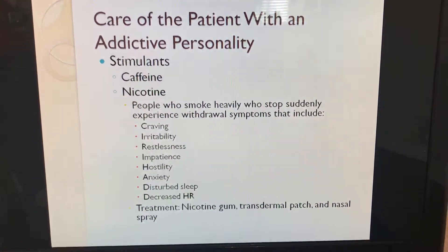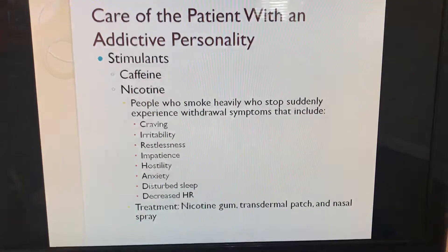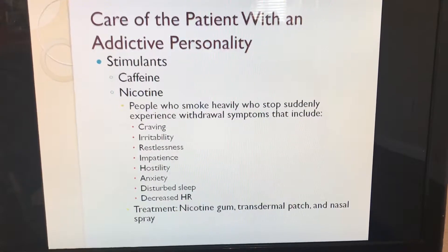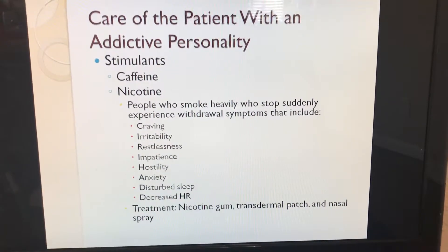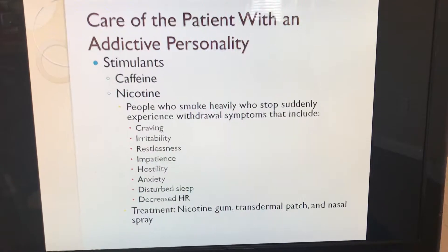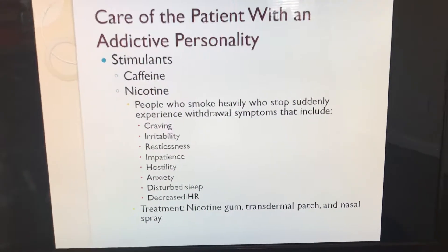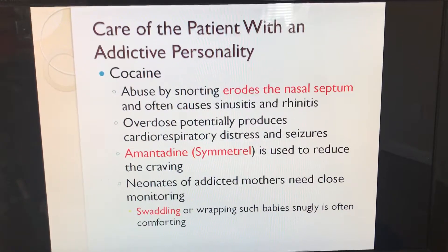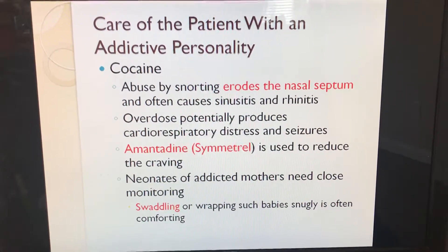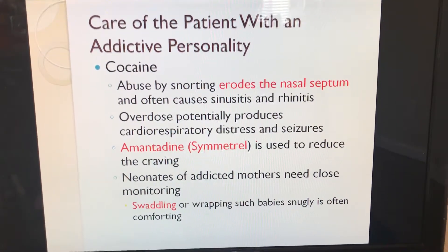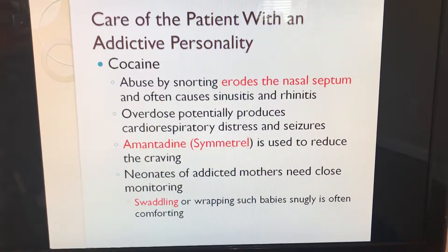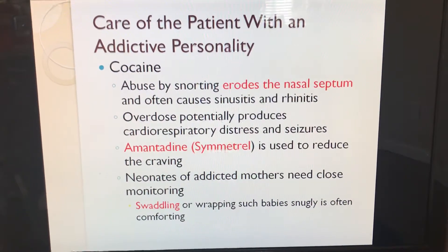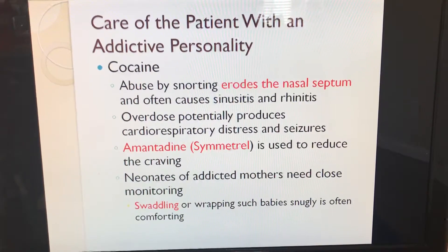Stimulants include caffeine and nicotine. People who smoke heavily and stop suddenly experience withdrawal symptoms including craving, irritability, breathlessness, impatience, hostility, anxiety, disturbed sleep, and disturbed heart rate. Treatment includes nicotine gum, transdermal patch, and nasal spray. Cocaine abuse by snorting erodes the nasal septum and often causes sinusitis and rhinitis; overdose potentially produces cardiorespiratory distress and seizures. Amantadine is used to reduce craving. Neonates of addicted mothers need close monitoring; swaddling such babies snugly is often comforting.